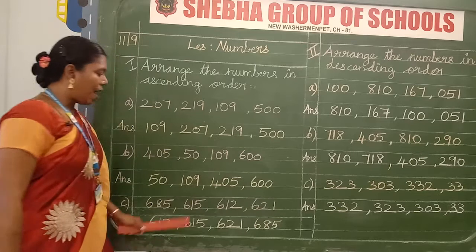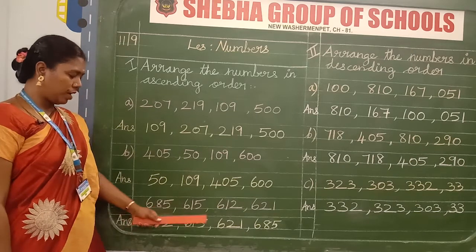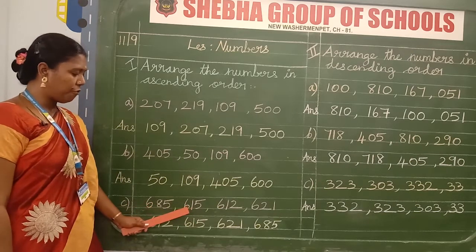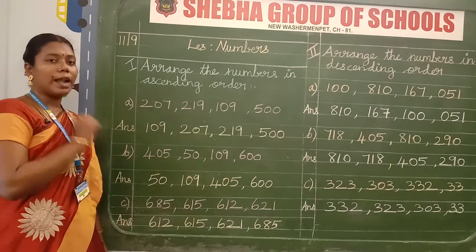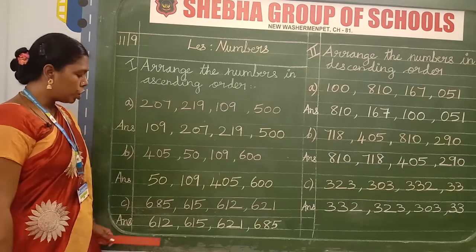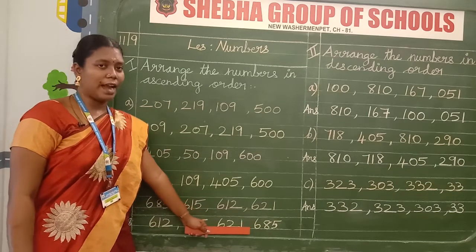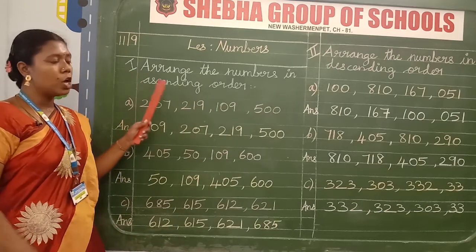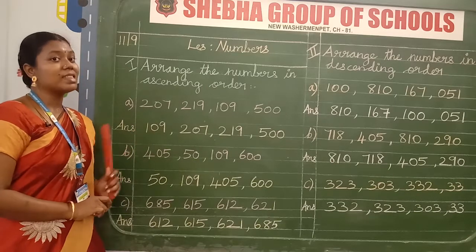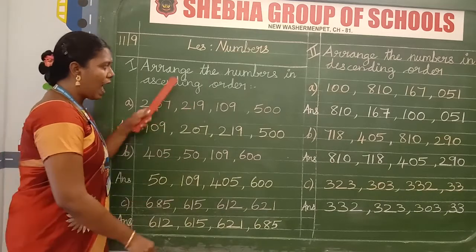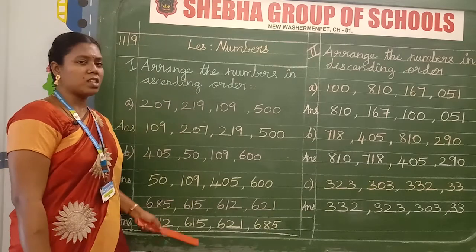Leave the finger gap here. After finishing the second sum, leave the line and start the C sum. The C question is: 685, 615, 612 and 621. This is the ascending order question. Write the answer for ascending order — smaller number to bigger number — so write 612, 615, 621, 685. This completes the 3 sums of the first Roman numeral. Listen and write carefully using a pencil. Sharpen your pencil and write the numbers neatly and clearly. Use only one page for this Roman numeral.